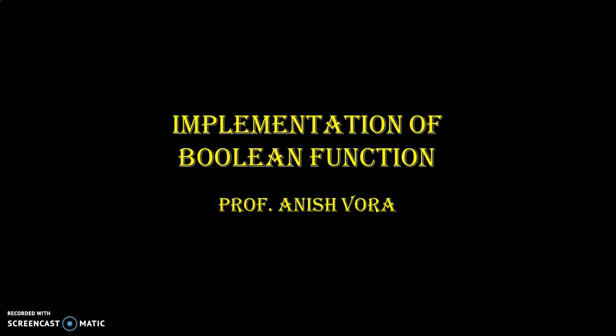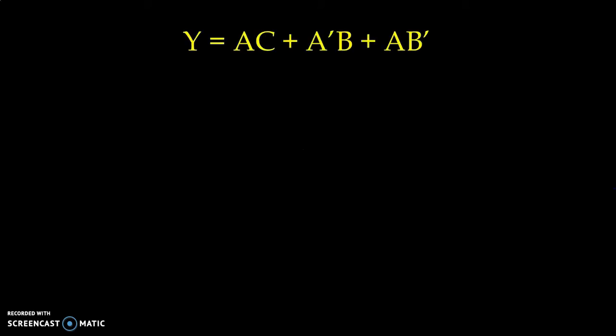Basic gate that is AND, OR, and Inverter. Suppose we take one Boolean function Y is equal to AC plus A bar B plus AB bar. From the equation we can see that it is SOP type of Boolean function. In case of SOP type of Boolean function, we know that we have product terms.